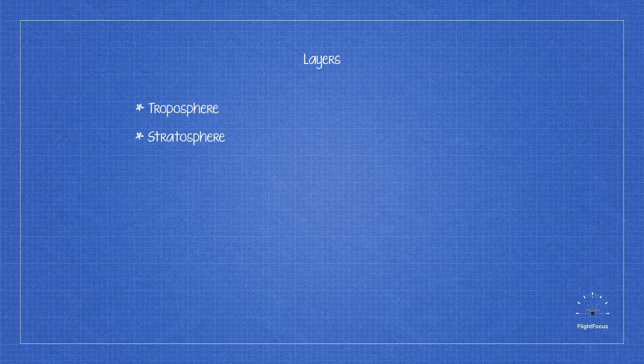There are five layers in the atmosphere, which consist of the troposphere, stratosphere, mesosphere, ionosphere, and exosphere.